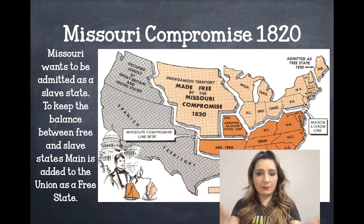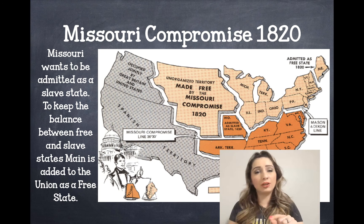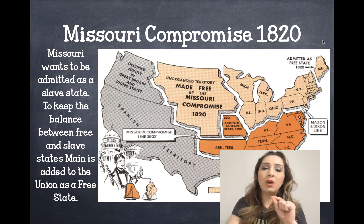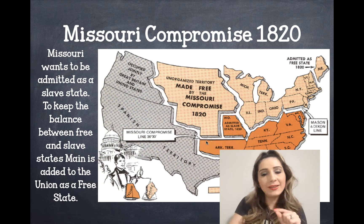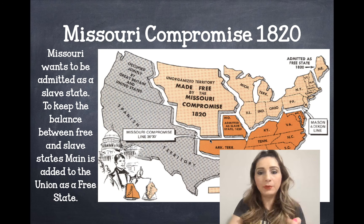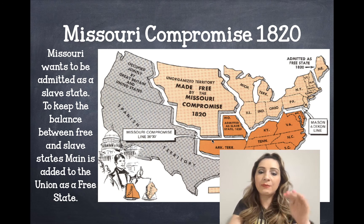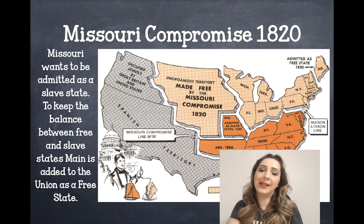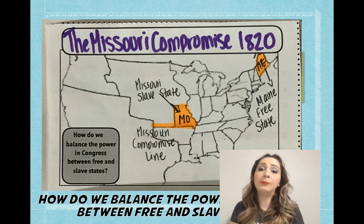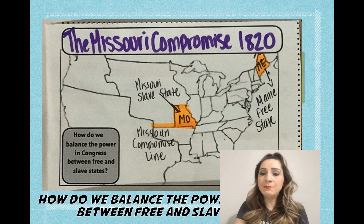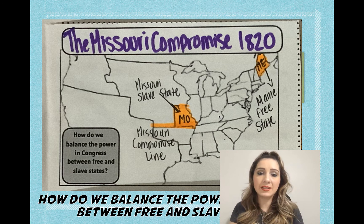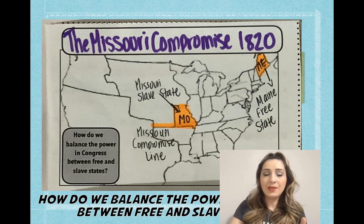They also drew a line through what was then the Louisiana territory. North of that line, no slavery would be allowed; south of that line, slavery would be permitted. So Missouri became a slave state, Maine became a free state, and that compromise line was established — that's how they alleviated sectional tension.